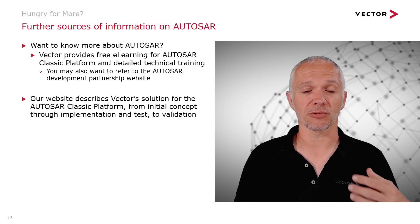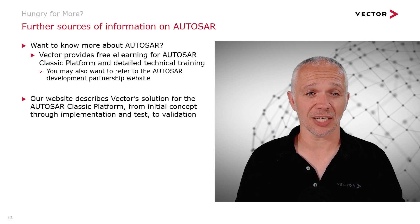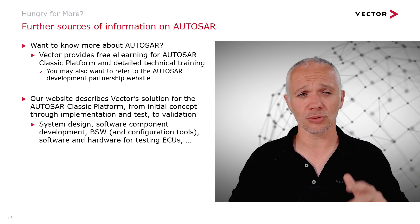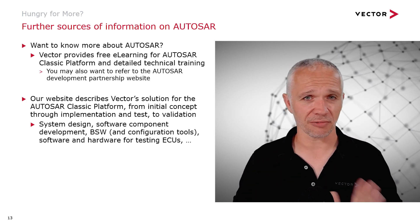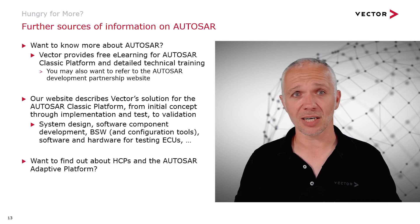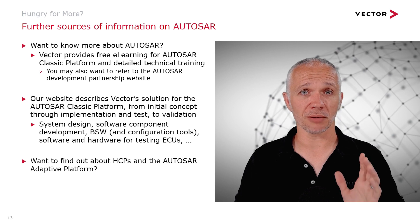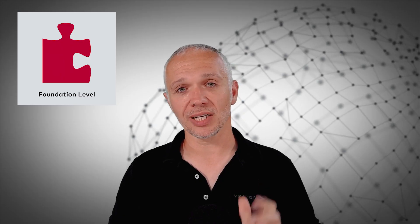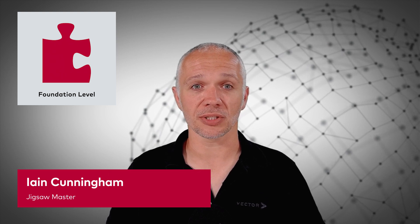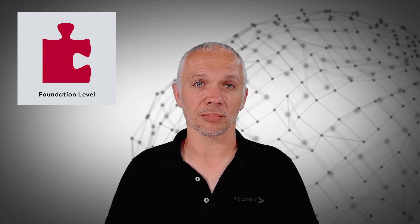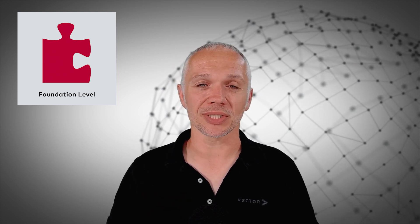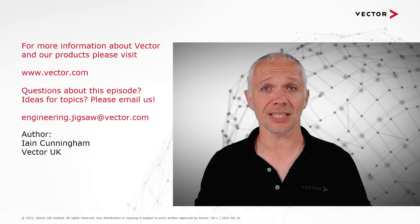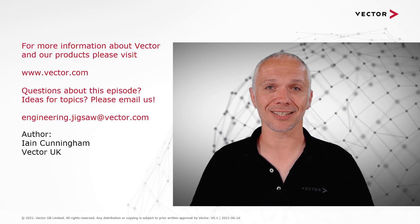Vector provides detailed technical training to ECU developers and people doing the system description process. The AUTOSAR Development Partnership website allows you to download all those thousands of pages of specifications. Most people don't want to deal with those thousands of specifications and come to a specialist vendor such as Vector. Vector has a whole solution around both the AUTOSAR Classic Platform and the Adaptive Platform — covering everything from initial concept development through implementation and testing to validation, including system design, software component description and development, basic software, configuration tools, and software and hardware for testing. If you'd like to know more about HCPs and the AUTOSAR Adaptive Platform, please keep an eye out for upcoming episodes. Thank you very much for joining us — please email us at engineering.jigsaw@vector.com if you have questions or topic ideas.